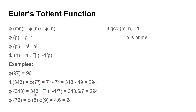We can also compute phi(343) using the formula n × ∏(1 − 1/p) over all prime factors. Since the only prime factor is 7, this gives 343 × (1 − 1/7) = 343 × 6/7 = 294. For phi(72): 72 = 8×9, and 8 = 2³, 9 = 3². Applying p^i − p^(i−1): phi for 8 gives 2³ − 2² = 8 − 4 = 4; phi for 9 gives 3² − 3 = 9 − 3 = 6. So phi(72) = 4×6 = 24.